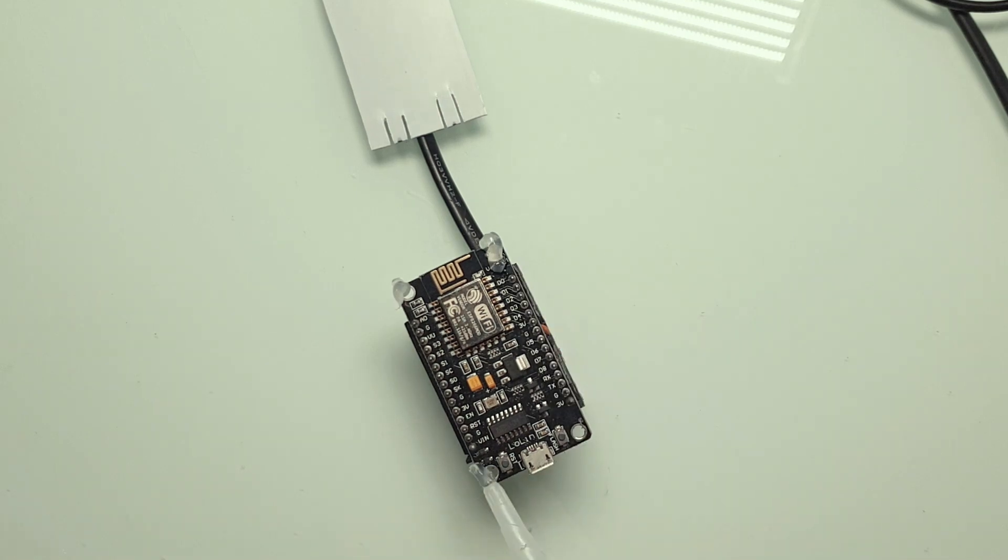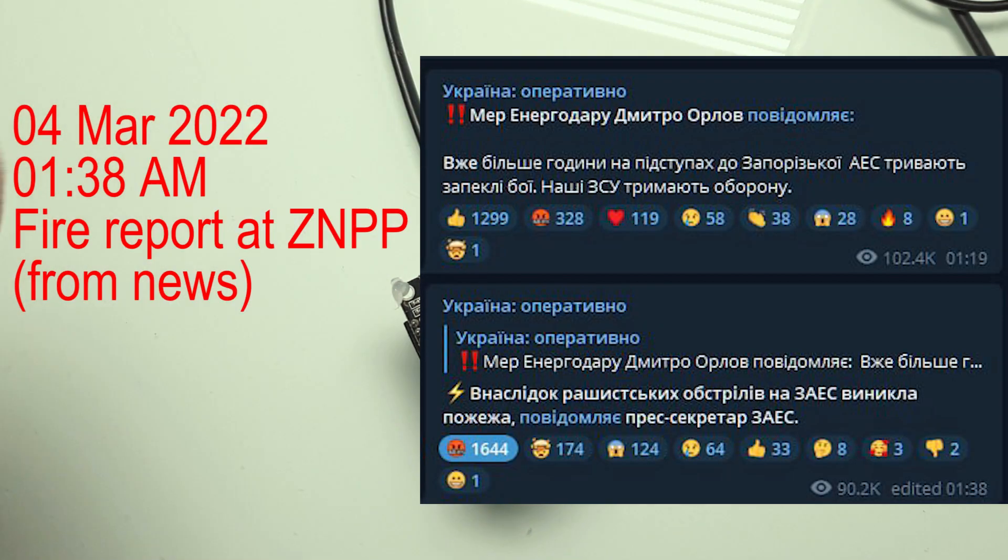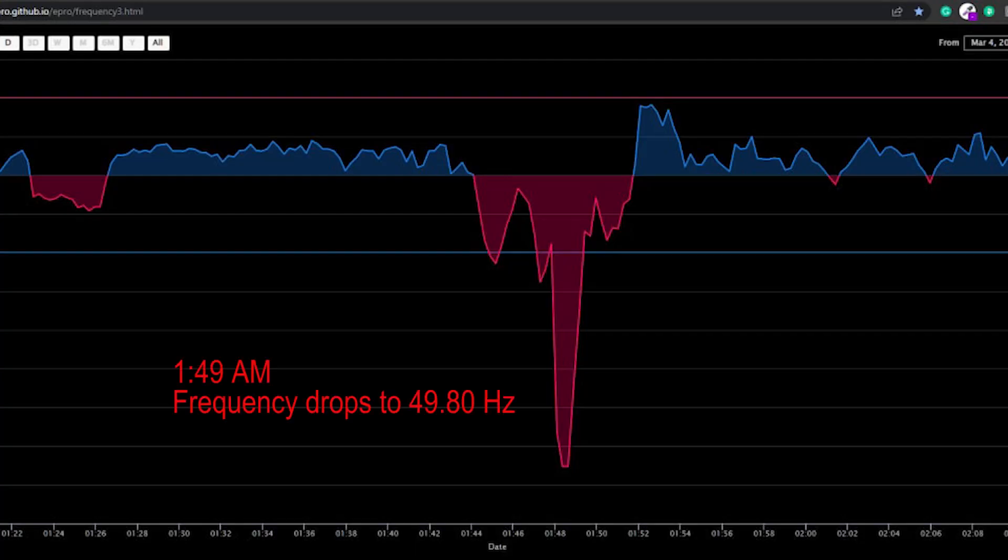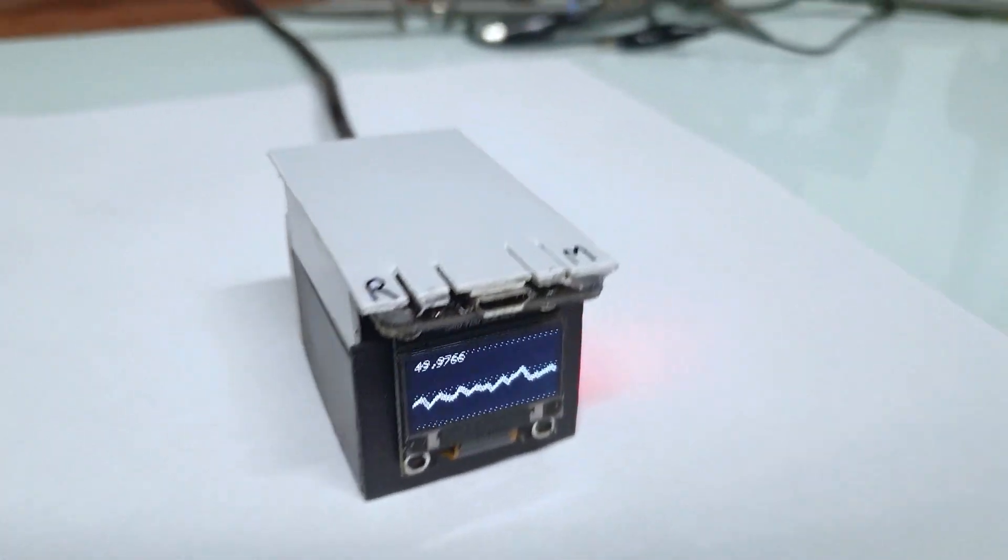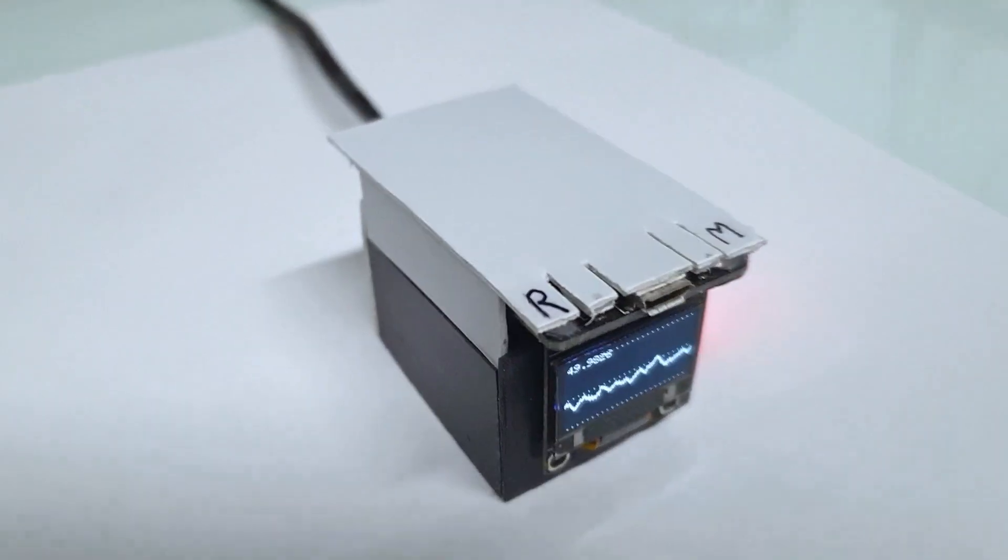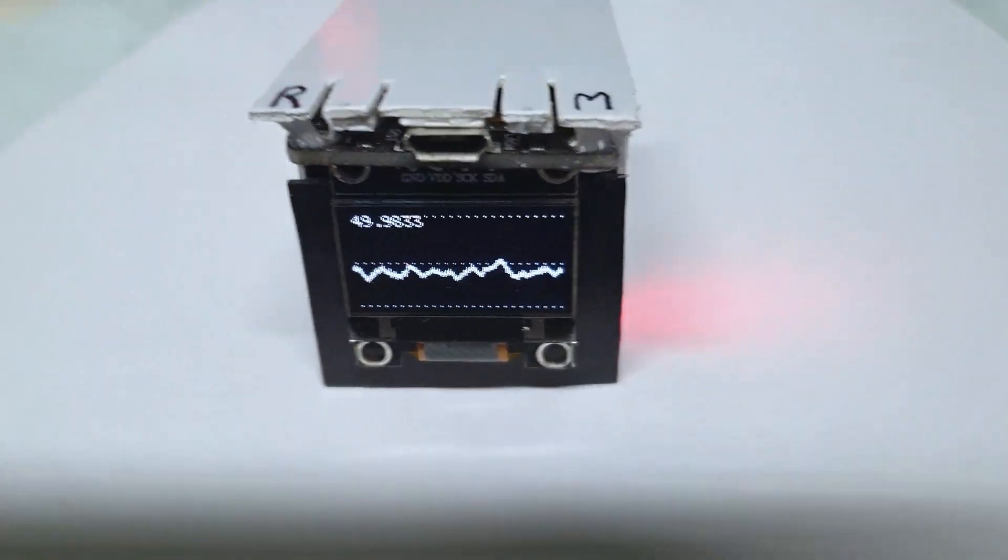I assume that after hearing shooting and getting reports about fire at the territory of the power plant, the personnel of the nuclear power plant probably started to shut down the power units. So as you can see, the device can be very useful to monitor the situation in the power grid, especially during times of emergencies.